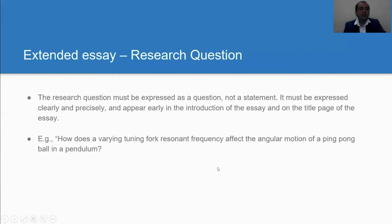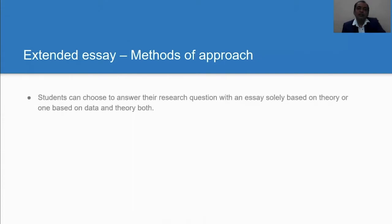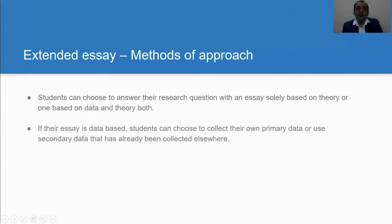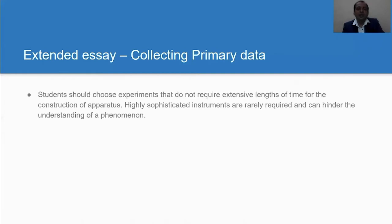Another section in criteria A is based on methods of approach. Students can choose to answer their research question with an essay which is solely based on theory, or it is a mix of both theory and the collection of data. Collection of data can be primary data or use of secondary data. So let's look into, if it is primary data, what are the key pointers that students need to take care of and supervisors need to guide the student accordingly.